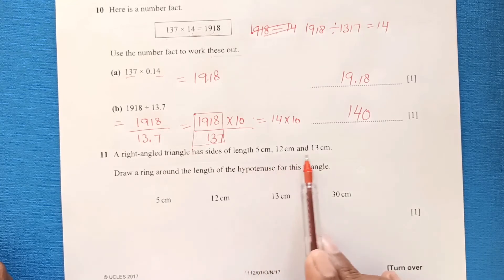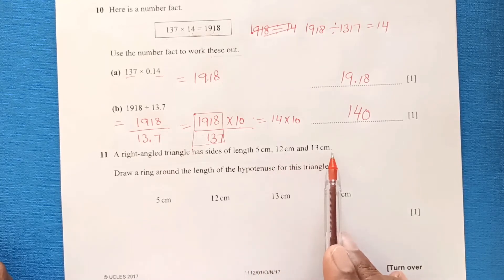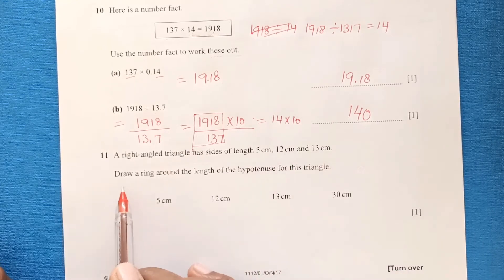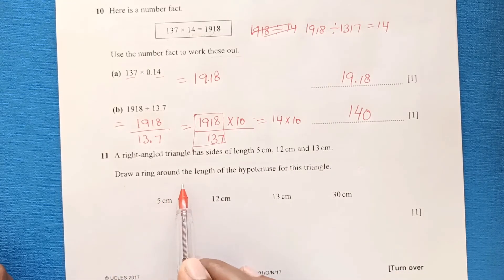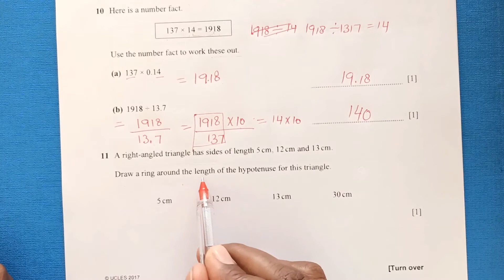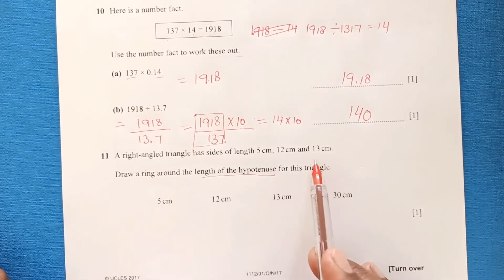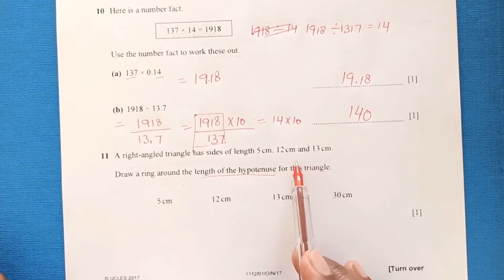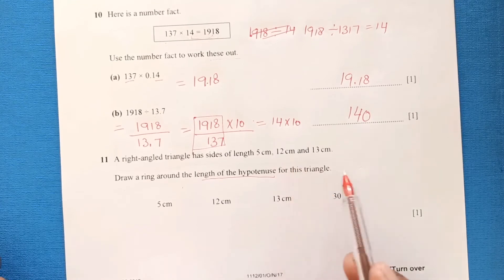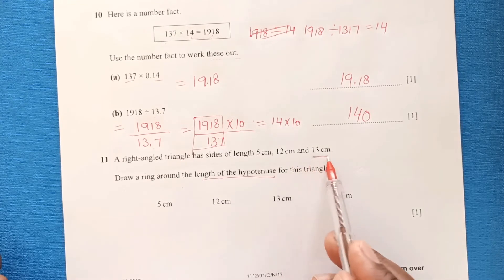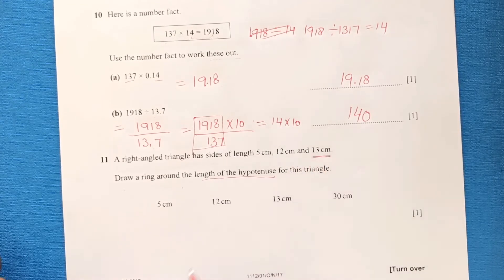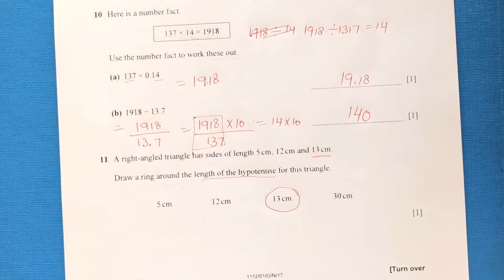Question eleven: a right-angle triangle has sides of length 5 cm, 12 cm, and 13 cm. Draw a ring around the length of the hypotenuse. The hypotenuse is always the largest side, so the hypotenuse is 13 cm — put a ring around 13 centimetres.